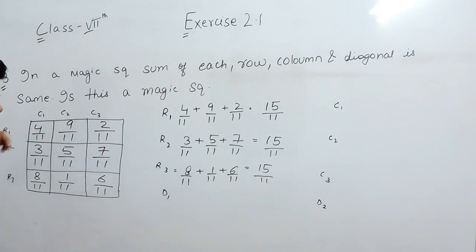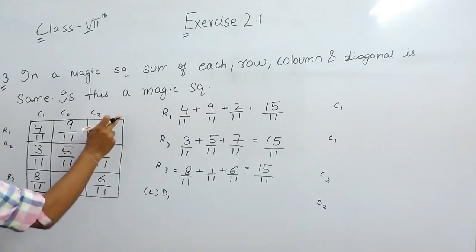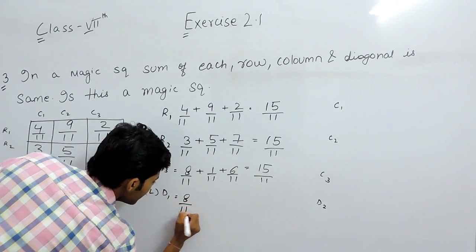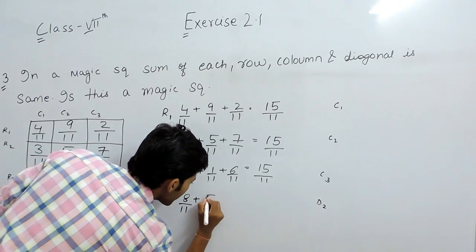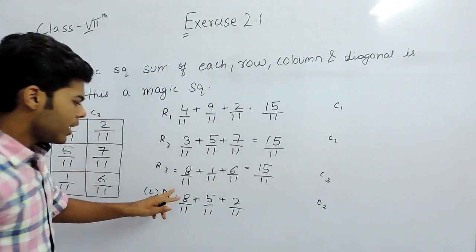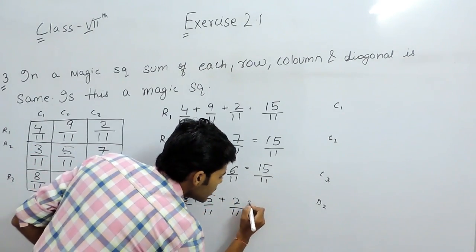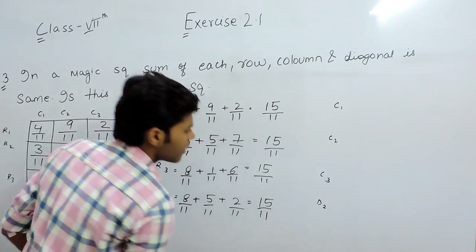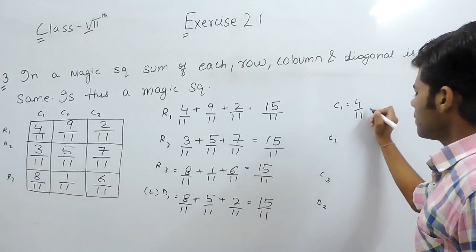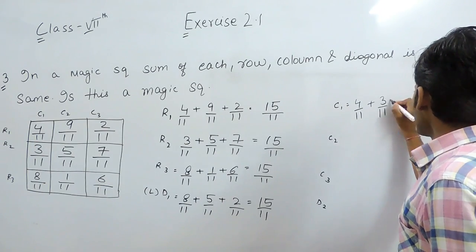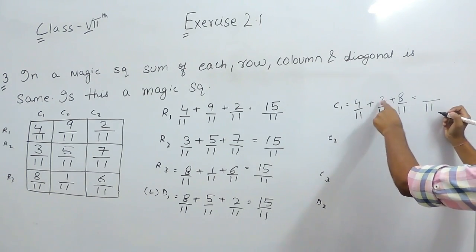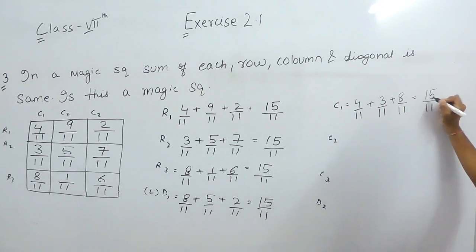Now checking the first column: 4 upon 11 plus 3 upon 11 plus 8 upon 11. The LCM will be 11. 4 plus 3 is 7 and 7 plus 8 is 15. So the first column sum is again 15 upon 11.